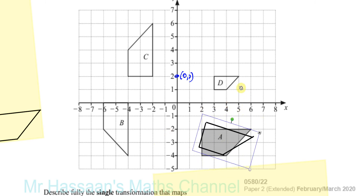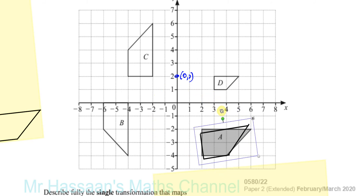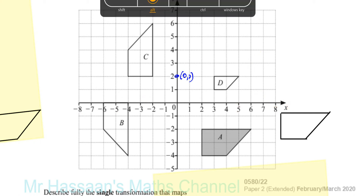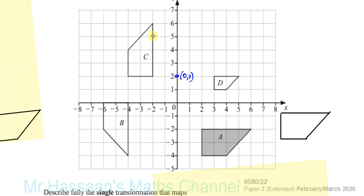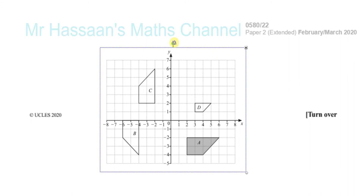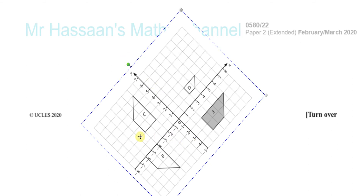Of course it's not an enlargement because they're the same size. And it's not a translation because the translated shape would just look exactly the same way up, just somewhere else. So if it's not a rotation, not a translation, and not an enlargement, then it must be a reflection. If you're not sure, I suggest you take your page and turn it around until the two shapes are horizontal with each other — then you can hopefully see that it's a reflection.